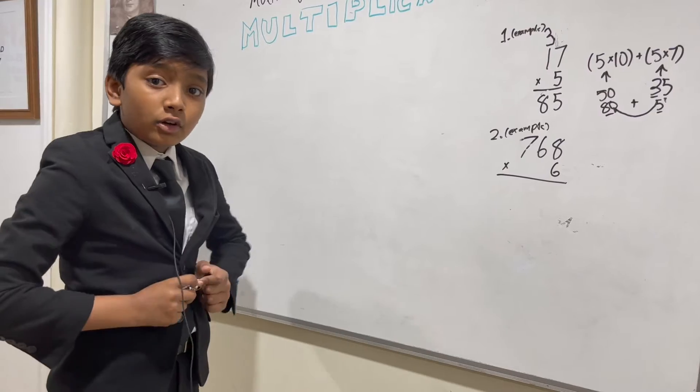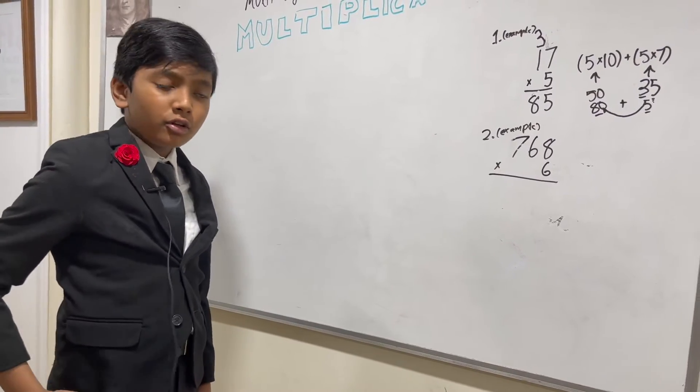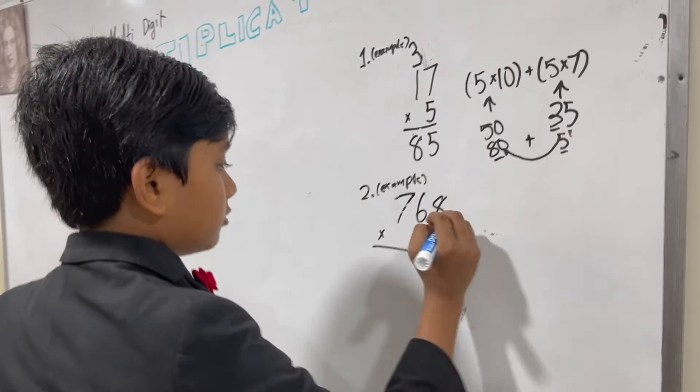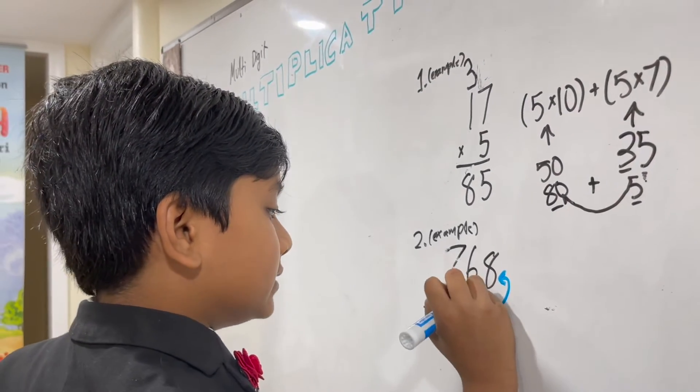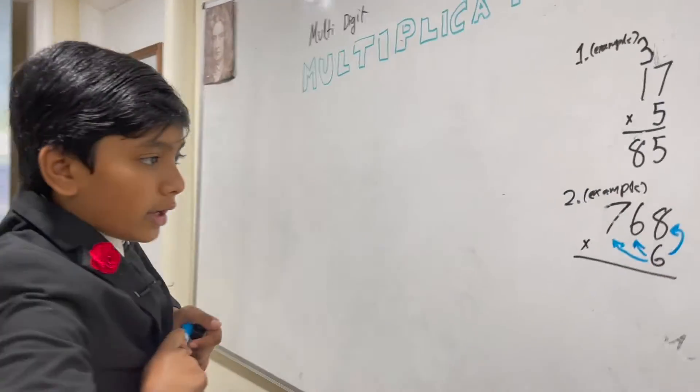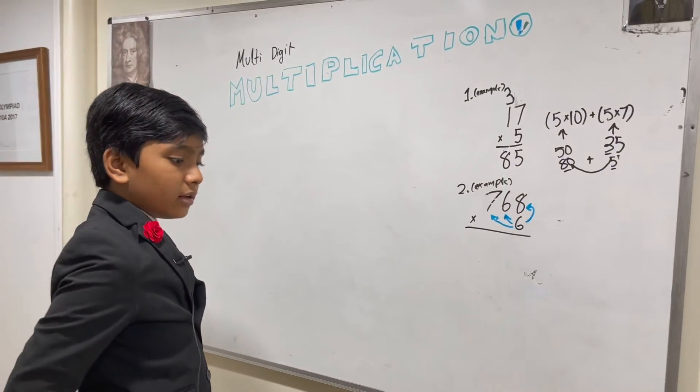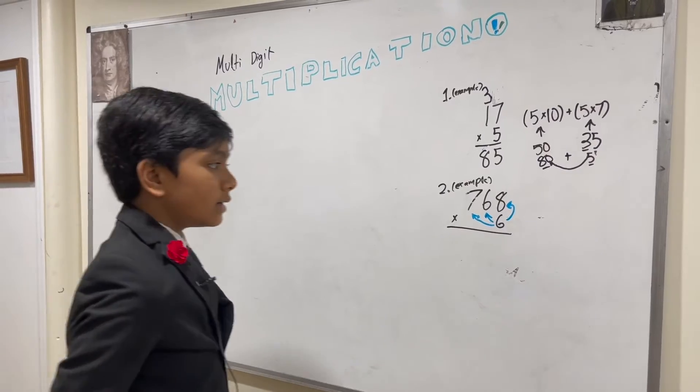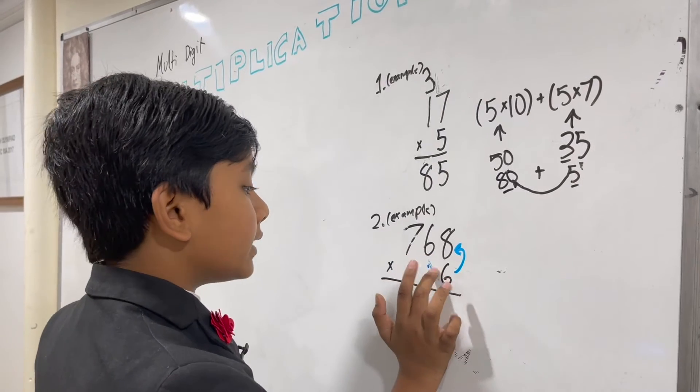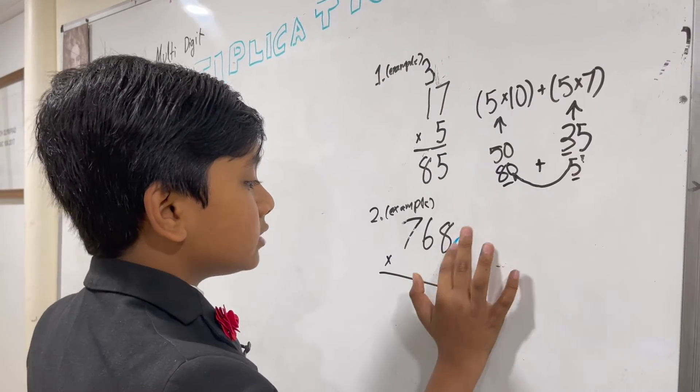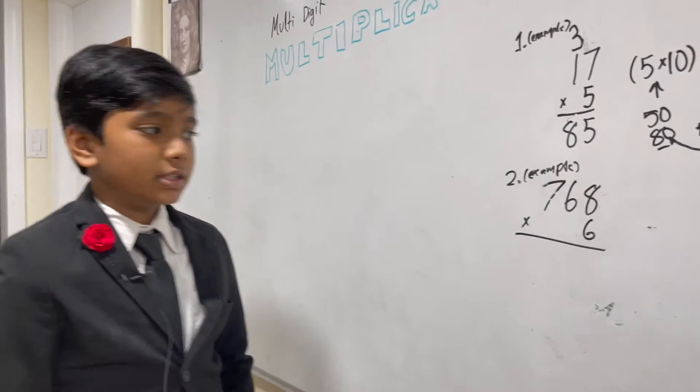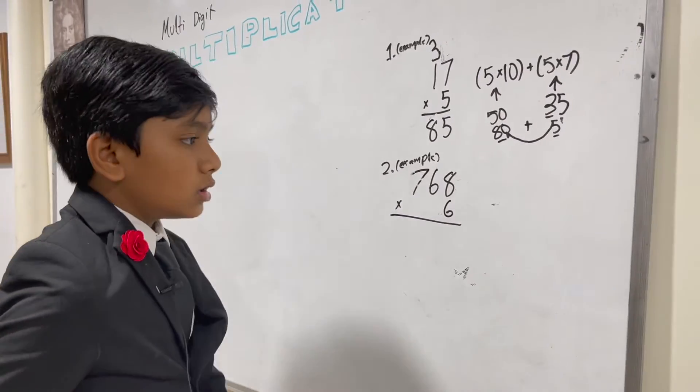So, first things first. Do you remember what to do? Well, yes. We multiply the 6 by the 8, then the 6 by the 60, then the 6 by the 700. We remember that, right? And remember, multiplying 6 by 60 or 700 just as easy as multiplying 6 by 6 or 7, just that you need to add some extra zeros, which is already covered.